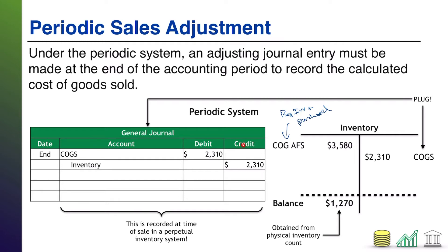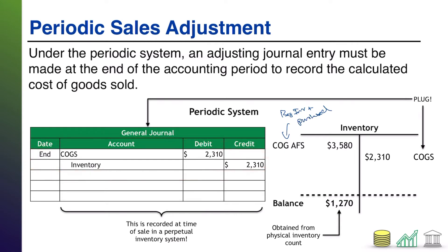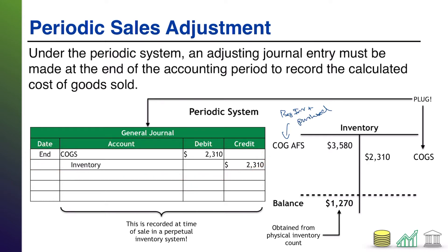This journal entry, if you're familiar with a perpetual inventory system, should look familiar. Every time you make a sale in a perpetual inventory system, you actually record this for the amount of that one sale. And of course, because you do that, by the time you get to the end of the period in a perpetual system, you already know your ending balance. In a periodic system, you actually have to figure out what COGS is based on the math just discussed.